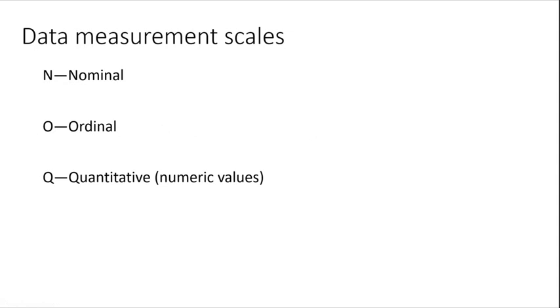We're talking about nominal, ordinal, and quantitative numeric values. Nominal data are data that can be described, not measured—names, labels, categories. Ordinal data has a rank, like low, medium, and high, or first, second, or third.